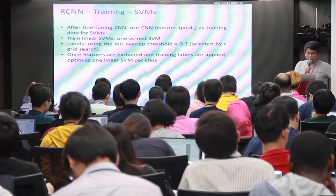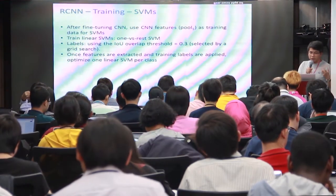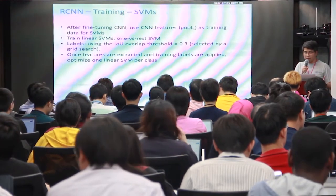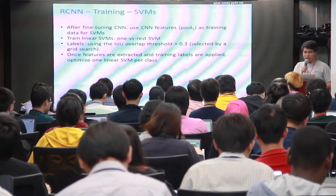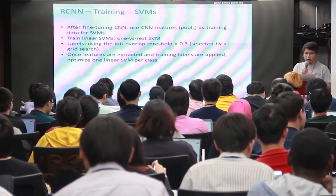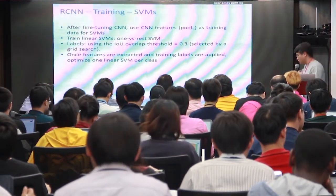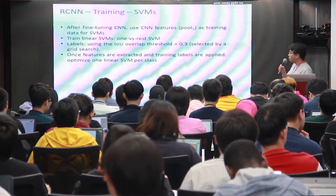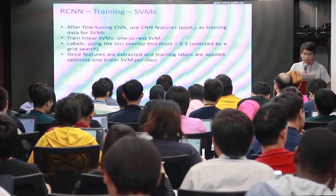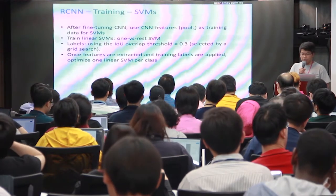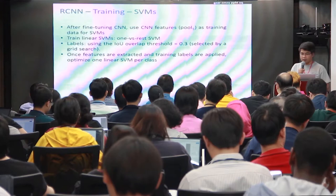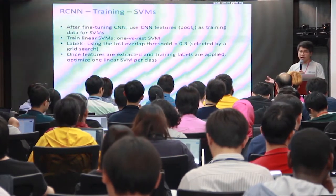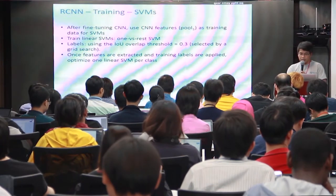After fine-tuning the CNN, CNN features are used as training data for an SVM. Multiple linear SVMs are trained one-versus-rest, with labels determined by IOU overlap threshold of 0.3. The authors perform parameter tuning using grid search to find the optimal threshold.